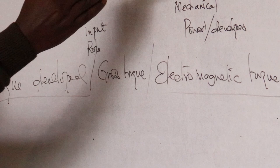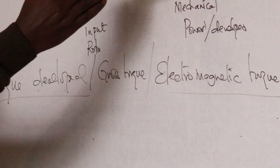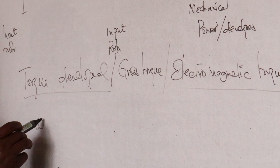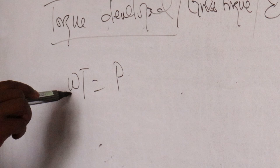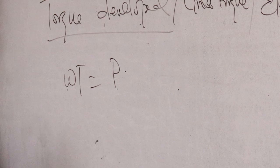The torque developed, we can relate it from the power developed. Remember, omega times T equals power — this is from elementary. That is the angular velocity. A torque should give you power. For example, on a bicycle — when do you need much power? When you want to start, to overcome the frictional losses.